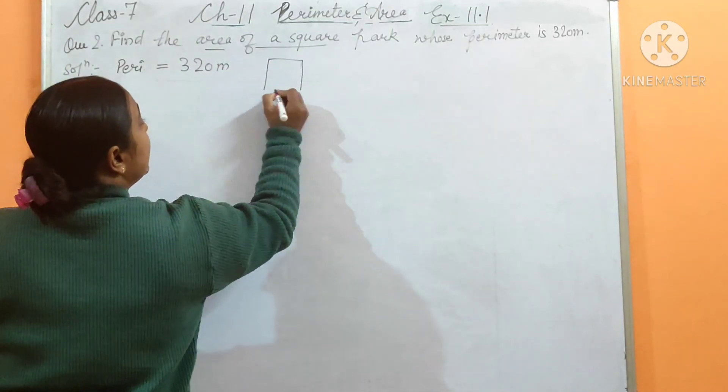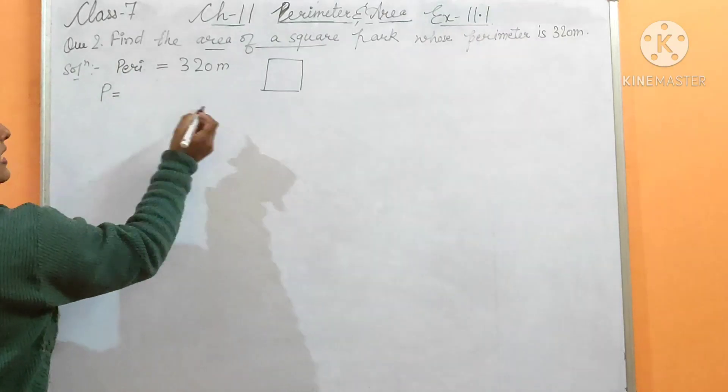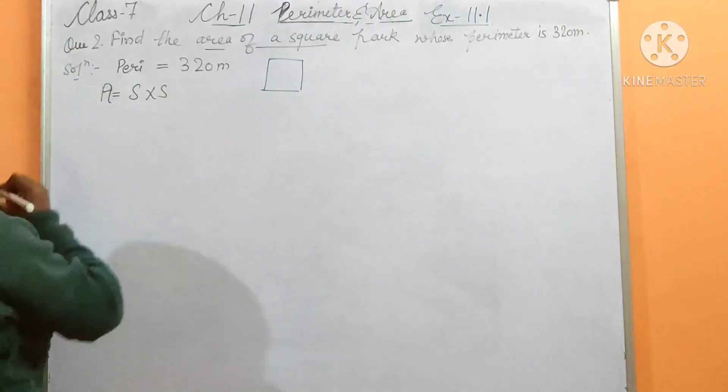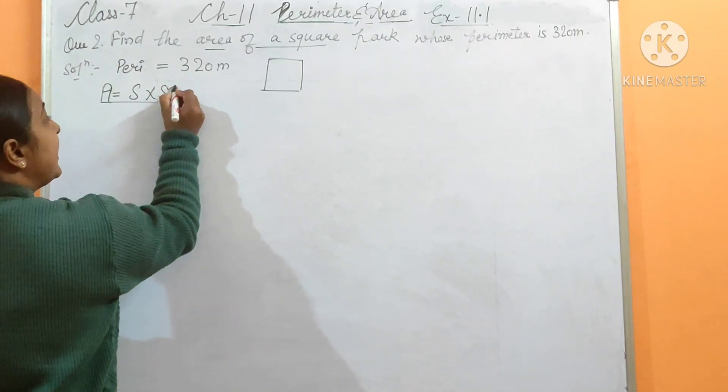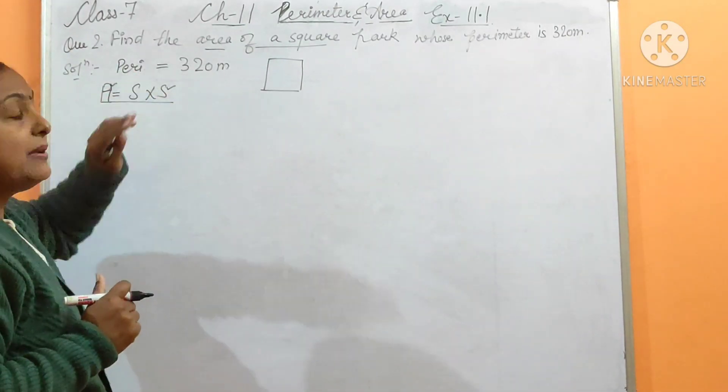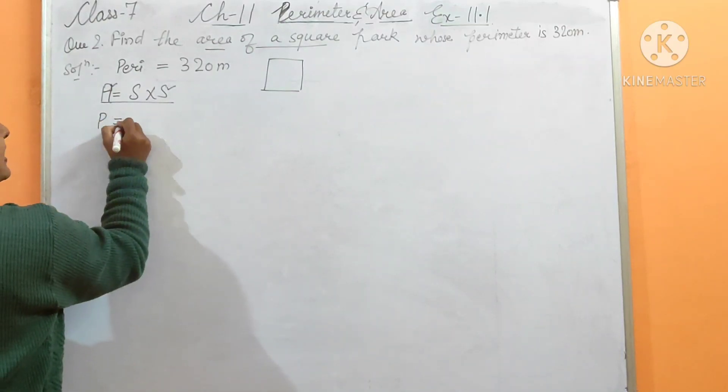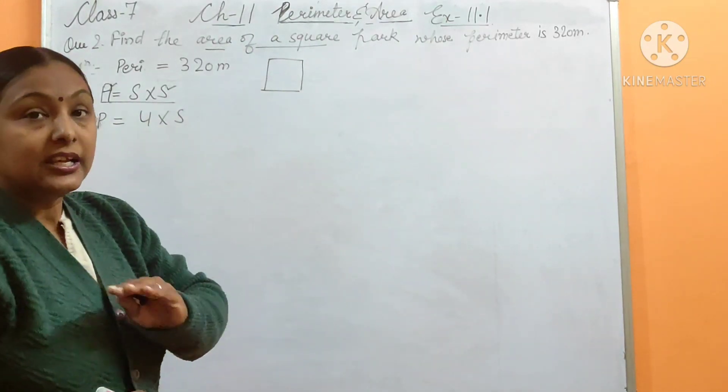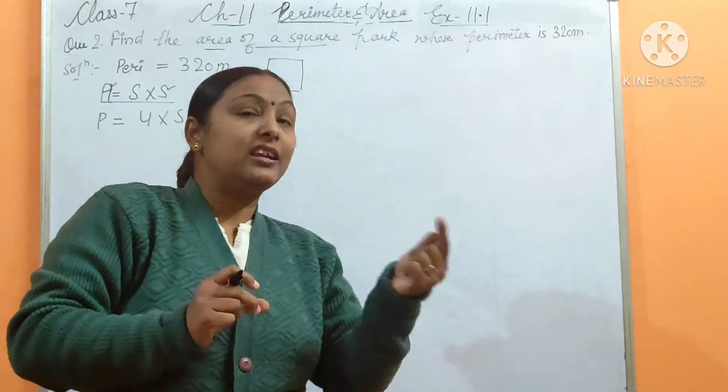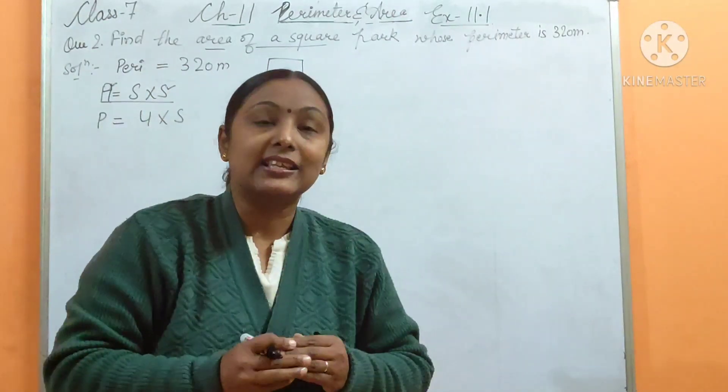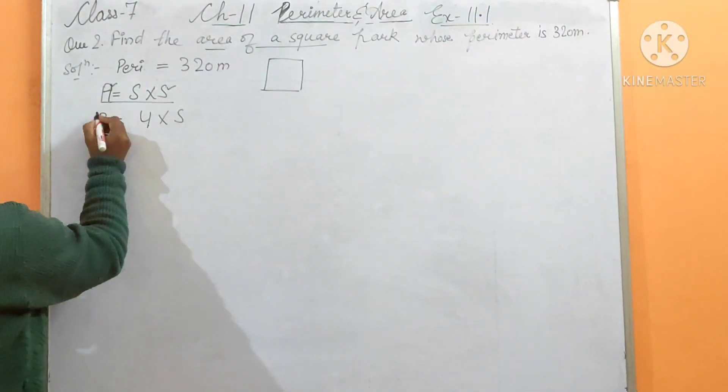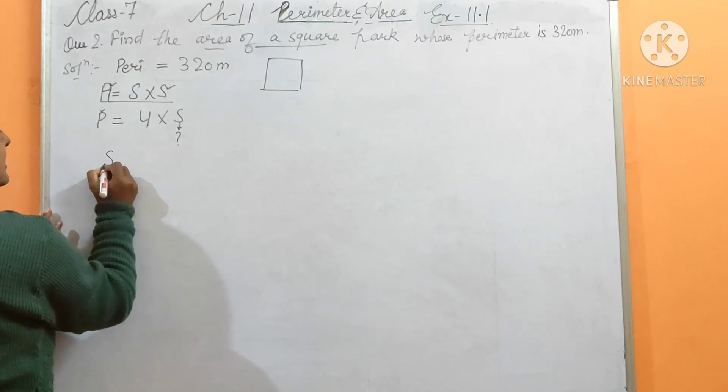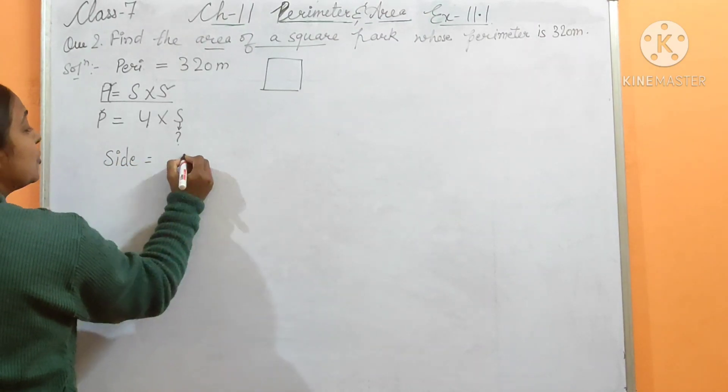We know what is the perimeter of a square. For area we need side into side. Neither side nor area is given, so where will it come from? Side will come from my perimeter. The perimeter formula is 4 multiplied by side. If we have one value unknown, then we can remove it. So side equals P by 4. Side equals to P by 4, which is 320 divided by 4, equals 80 meters.